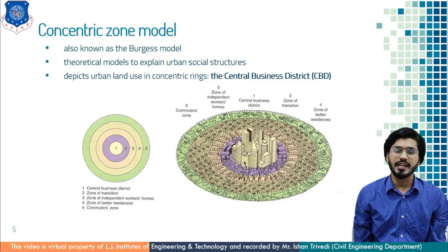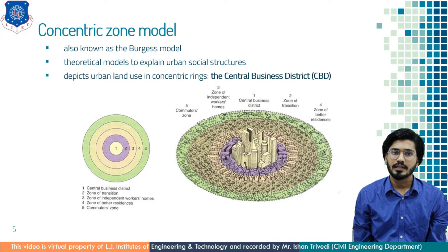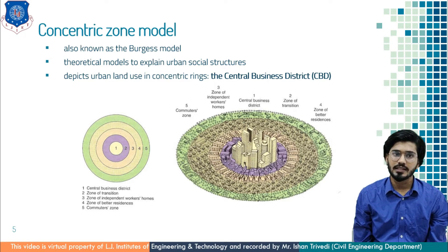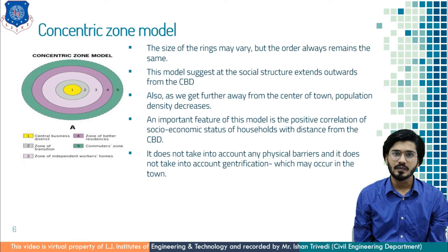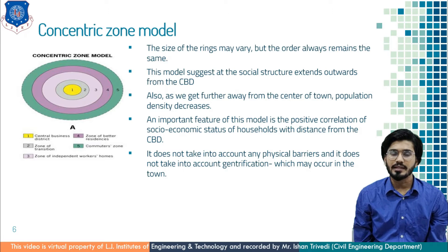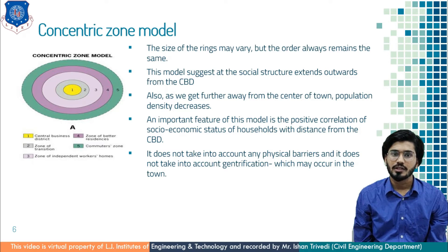The third zone is that of independent workers' homes — low income class residential homes. The fourth circle is the zone of better residents, i.e., middle class residential homes. The last one is the zone of commuters — those who can afford to travel from the outer zone to the CBD. The size of the rings may vary, but the order of these defined zones remains the same. This model suggests that as the social structure extends outward from the CBD, the lower class live closer to the town center while the upper class live away from it, because they can afford to commute.